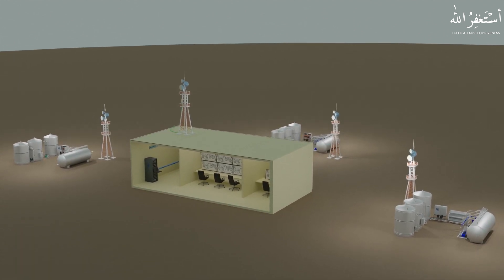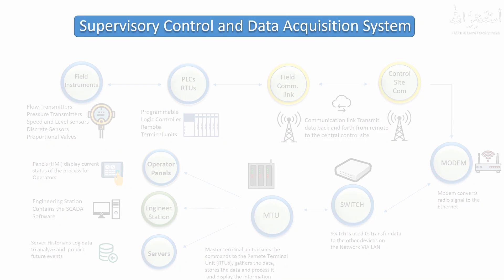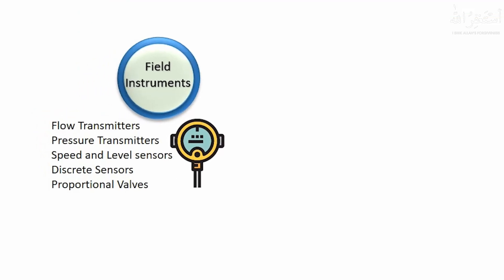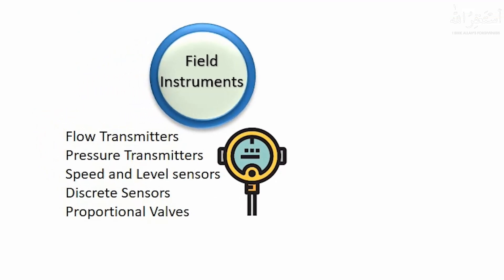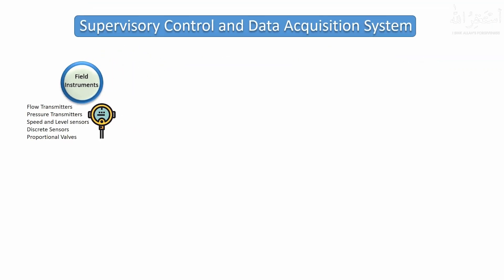Now let's see a flowchart diagram of the SCADA system to understand what its components are and how they communicate with each other and with field devices. First come the field devices. Field devices or field instruments refer to discrete sensors or analog transmitters installed in the process field to measure parameters like flow of liquid, temperature, and pressure, or it can be a control valve controlling the flow of liquid.